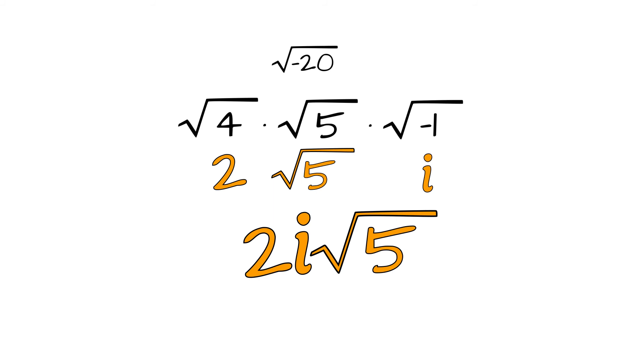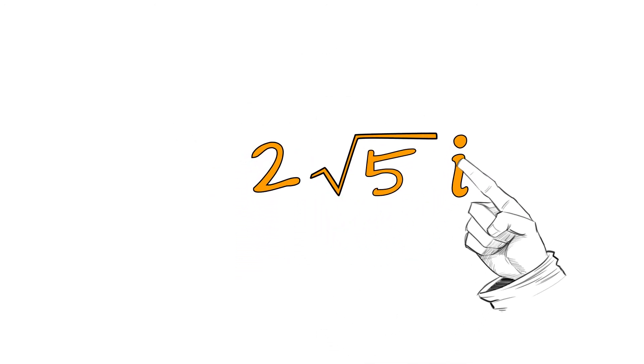You might be wondering, why did we move the i to the front of the radical? Technically, both answers are correct, but we traditionally write the radical on the end to avoid confusion. Looking at the original response, 2 square roots of 5i,